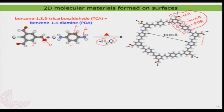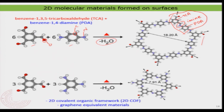Another example: instead of a twofold amine, use a threefold amine with three amino groups. With correct stoichiometry, you again make a hexagonal network on the surface, but the network structure is slightly smaller — about 18.2 ångströms between edges in one case and about 7.9 ångströms in the other. By selecting the right precursor you are making a two-dimensional sheet of carbon and nitrogen — essentially a graphene equivalent or doped graphene.